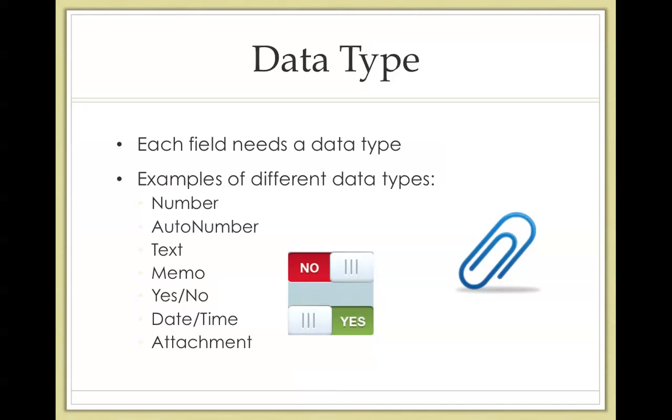For data type, each field needs a data type, as this determines what kind of data can go into a field. A number field allows only numeric data, and an auto number field increases by one with each new record, which we are actually familiar with making. It just involves adding a new field in.